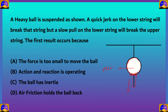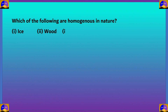Option A says the force is too small to move the ball — however, a quick jerk supplies more rapid force, and force magnitude is not the key factor here, so option A is incorrect. Option B says action and reaction is operating — this is not why the lower string breaks, so option B is incorrect. Option D says air friction holds the ball back — this is incorrect because it is inertia, not air friction, that keeps the ball at rest. Therefore, option C, the ball has inertia, is the correct answer.